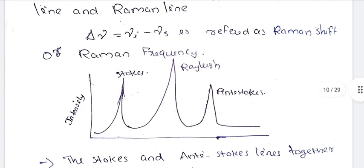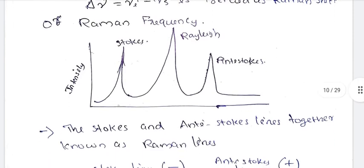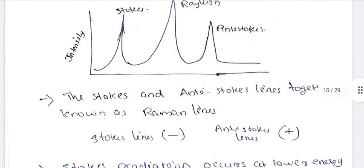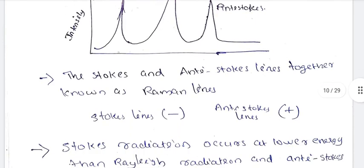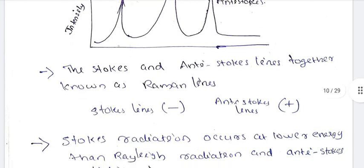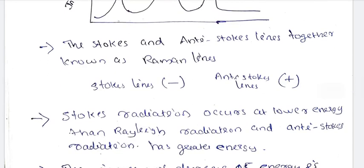The Raman shift, Raman frequency — Stokes lines, Rayleigh line, and anti-Stokes lines together are known as Raman lines. Stokes lines are negative and anti-Stokes lines are positive.